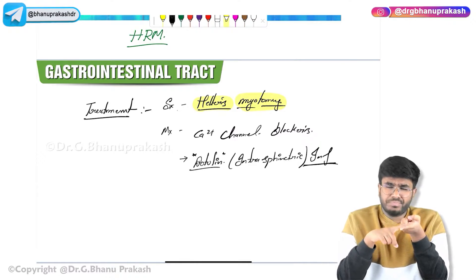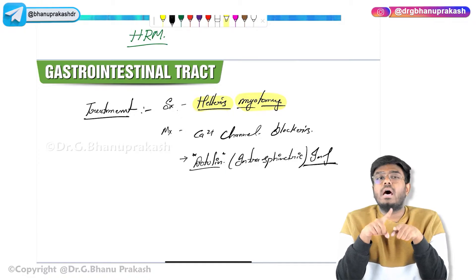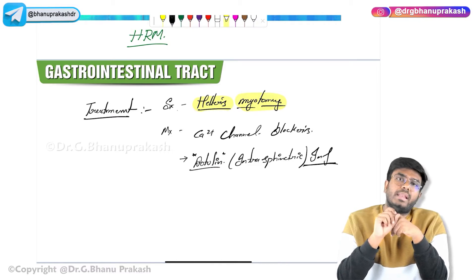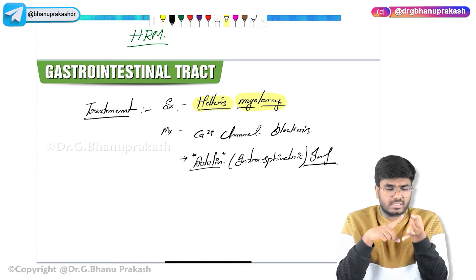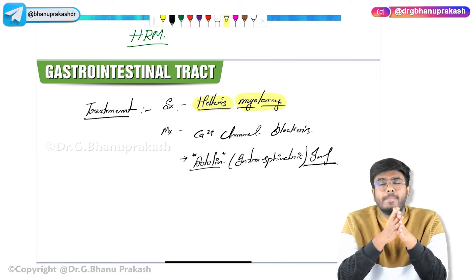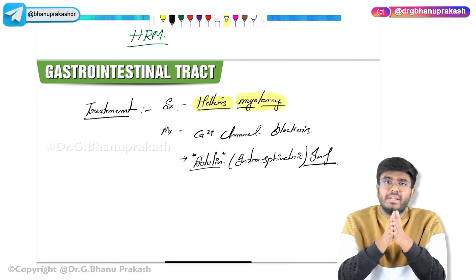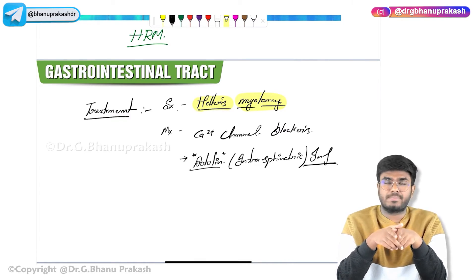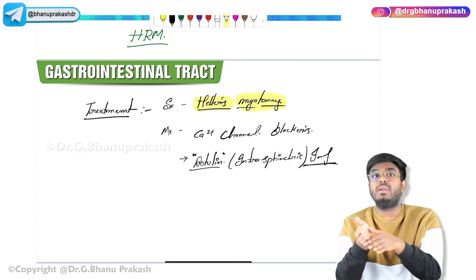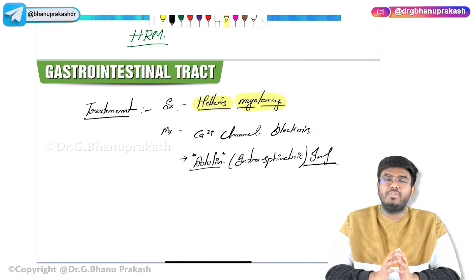Summary: High resolution manometry is the gold standard. On barium swallow, rat tail or bird beak appearance is seen. Achalasia Cardia is associated with Chagas disease, diabetes mellitus, sarcoidosis, and amyloidosis. It is seen in young females with the main complaint of progressive dysphagia — more dysphagia for liquids, initially dysphagia for solids, later liquids also, but more dysphagia for liquids. With this, the topic of Achalasia Cardia is completed. Hope the video is helpful. Thank you.